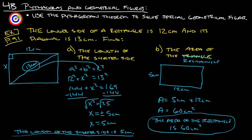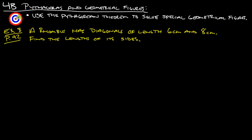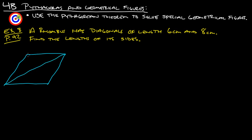Let's take a look at another example — example 8 from page 92. A rhombus has diagonals of length 6 centimeters and 8 centimeters; find the lengths of its sides. Remember, a rhombus is basically just a square that got squished — all four sides are the same. The diagonals bisect each other: the 6-centimeter diagonal gets cut in half, and the 8-centimeter diagonal gets cut in half as well.